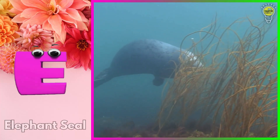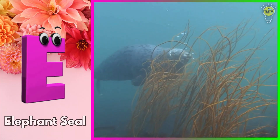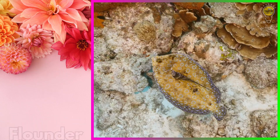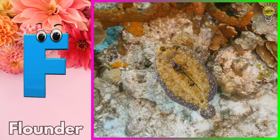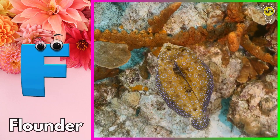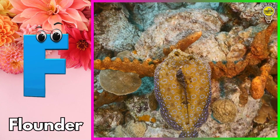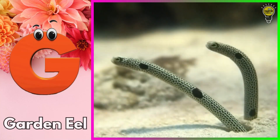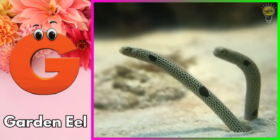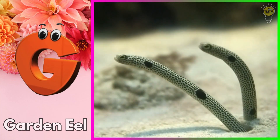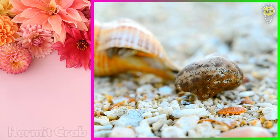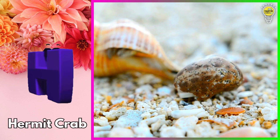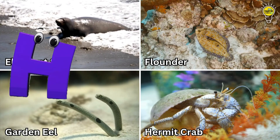E is for elephant seal. F is for flounder. G is for garden eel. H is for hermit crab.